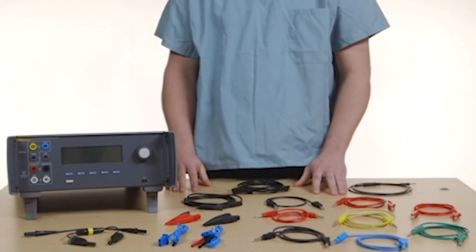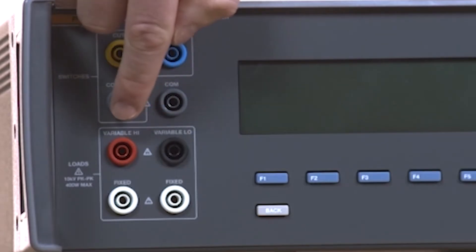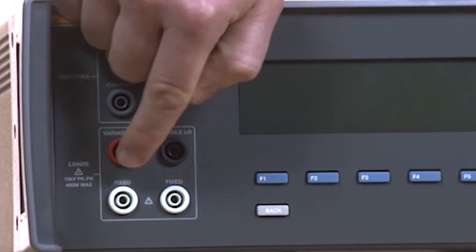The CQM or contact quality monitor connection is below. Clearly labeled are the load connections: variable high, variable low, and fixed.